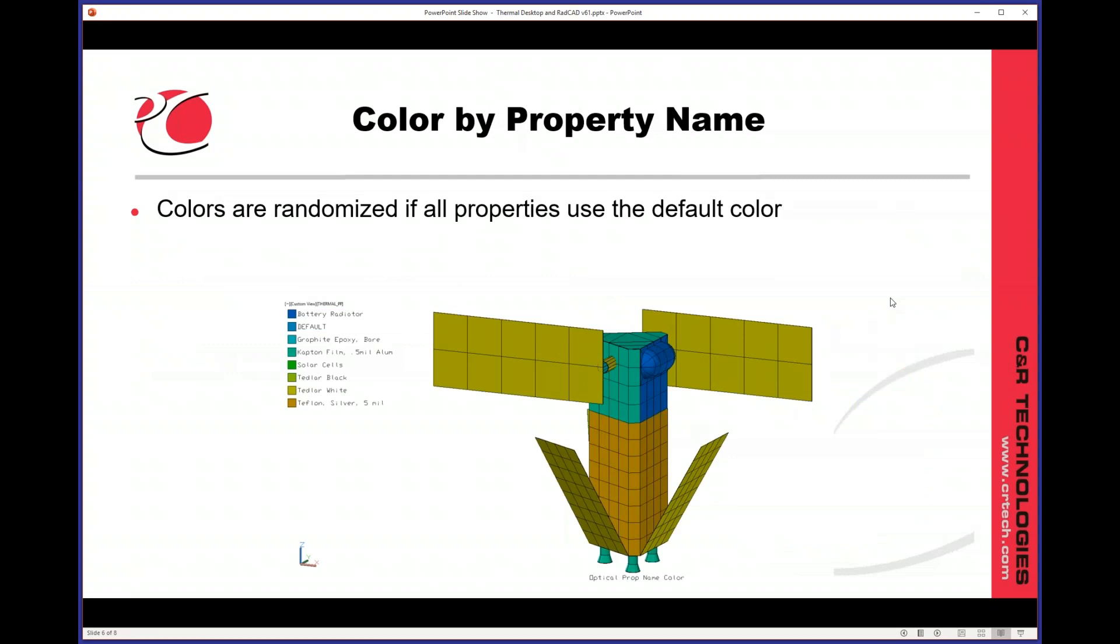In the model checks, there was a color by property name option that's been there for a long time. But basically you would have to go through and set the colors for all of the different optical properties. If all of your properties are in the default color, we now randomize the colors. We have added in a legend that will be displayed so you know what material is associated with which color.